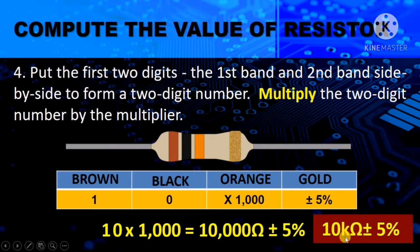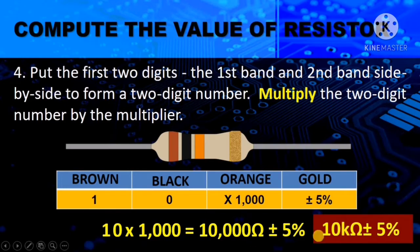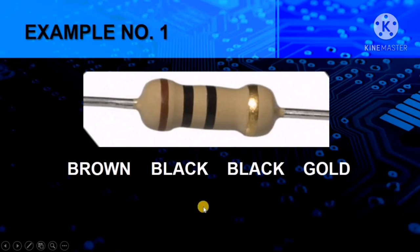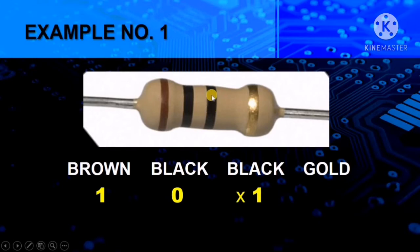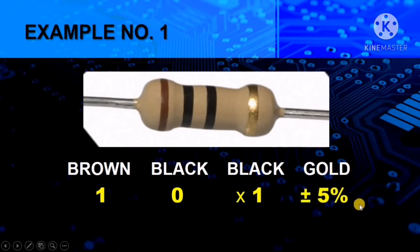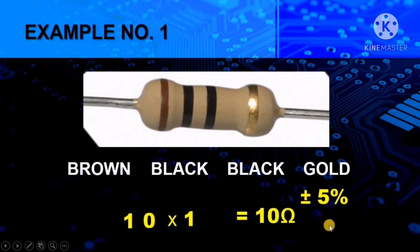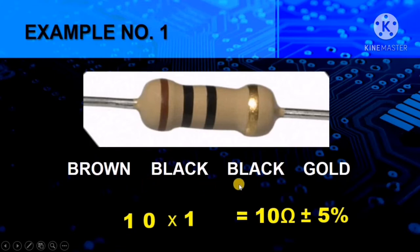We will be using K, meaning kilo, and kilo is a prefix for 1,000. Example number 1: the colors are brown, black, black, gold. Brown has 1, black is 0. For the multiplier, black becomes 1 — not 0, because anything multiplied by 0 would be 0. So 10 times 1 equals 10 ohms plus or minus 5%. For brown, black, black, gold, the value is 10 ohms plus or minus 5%.